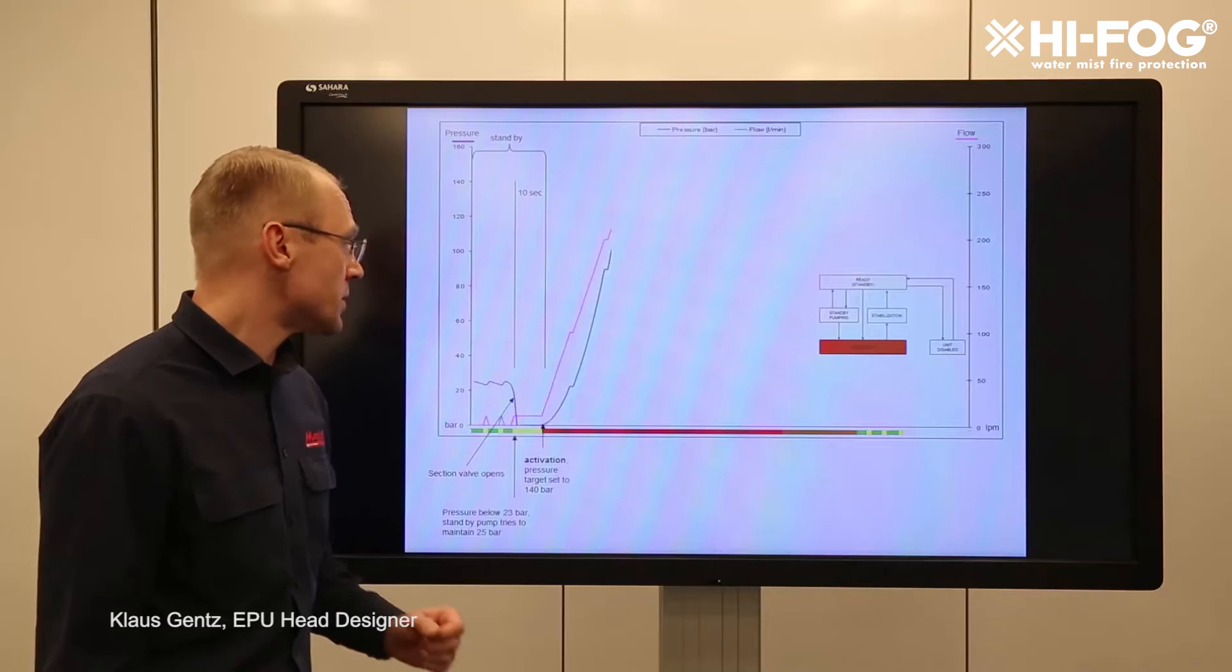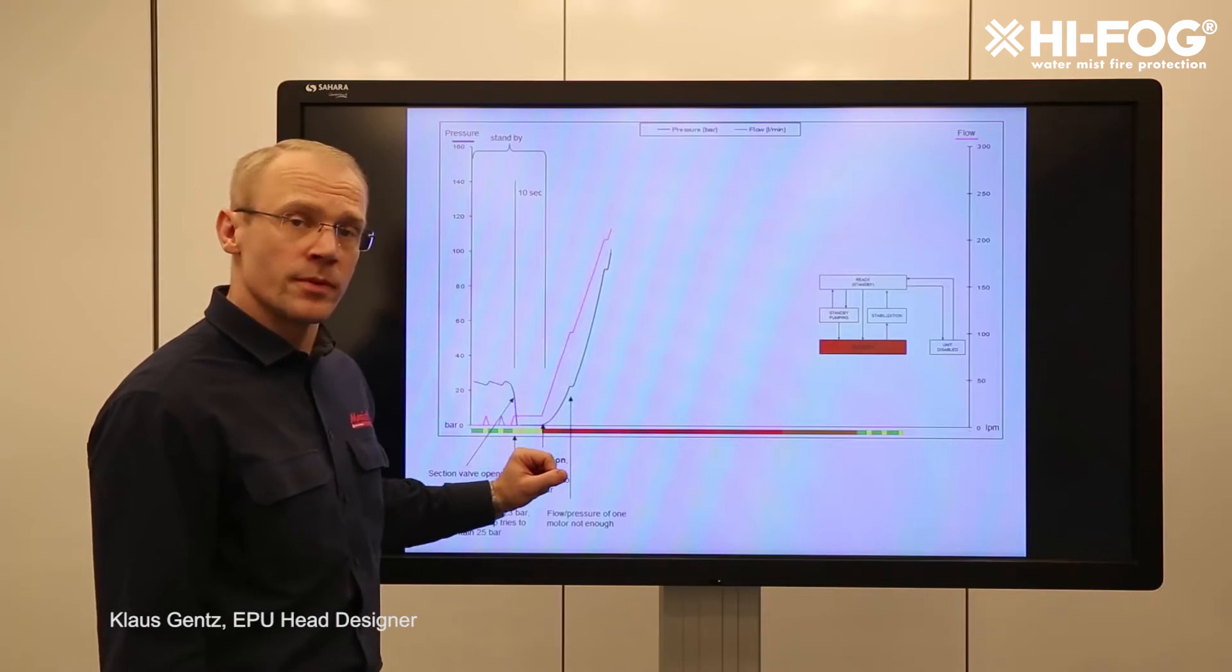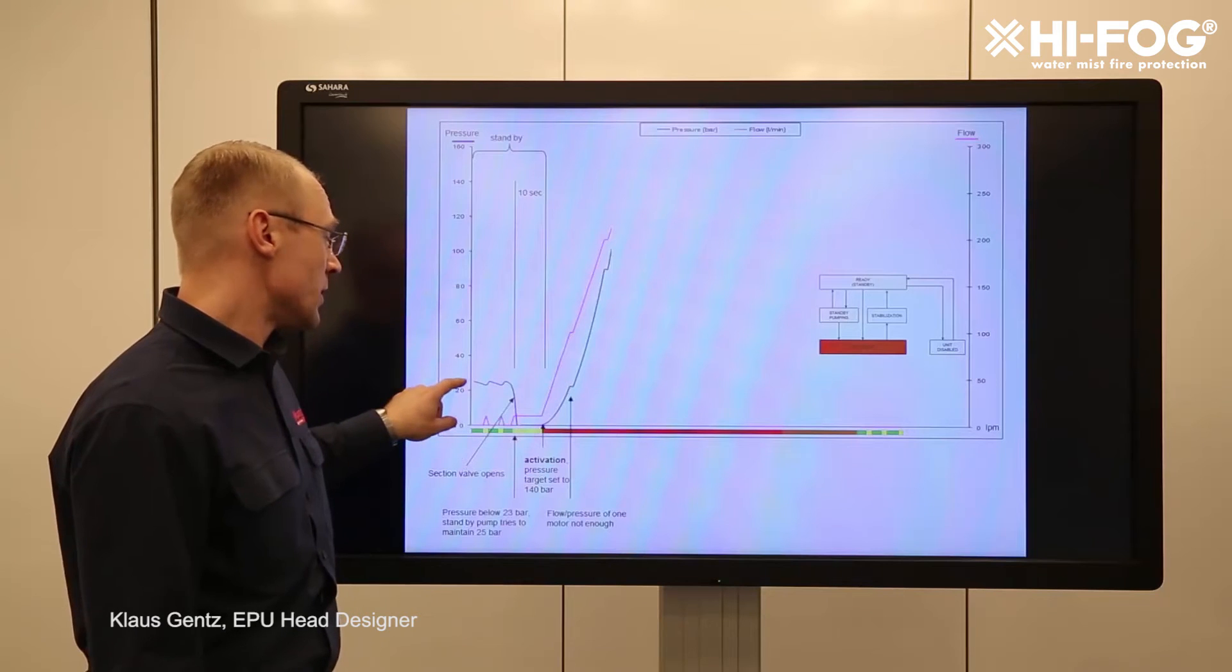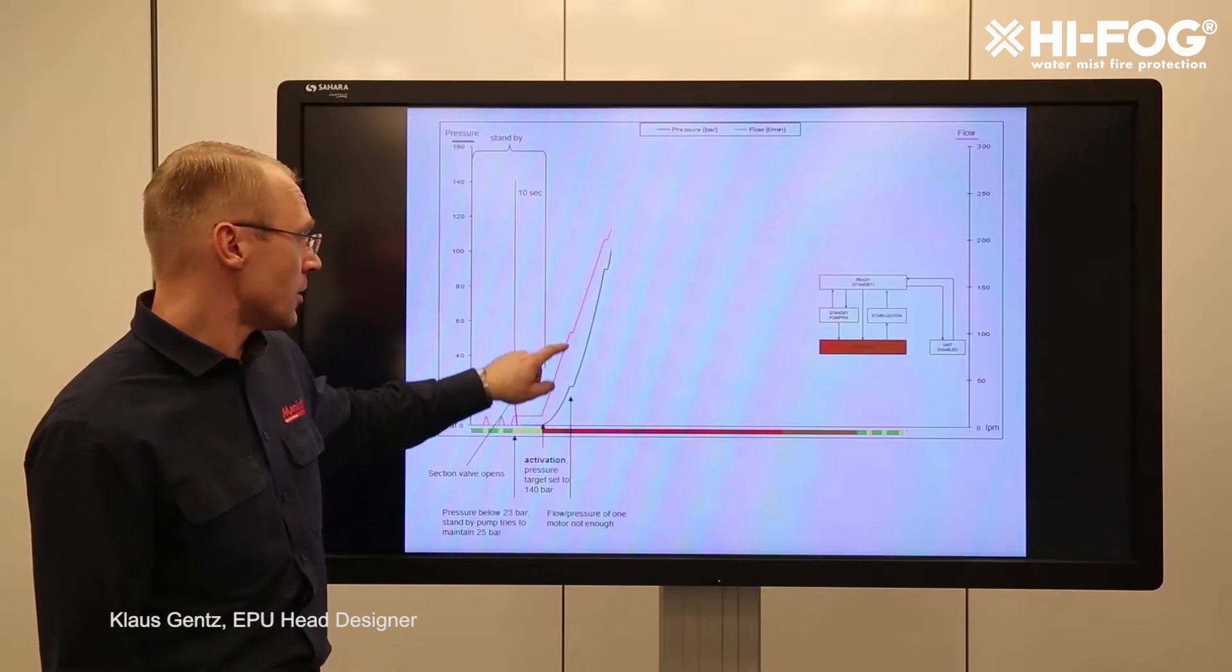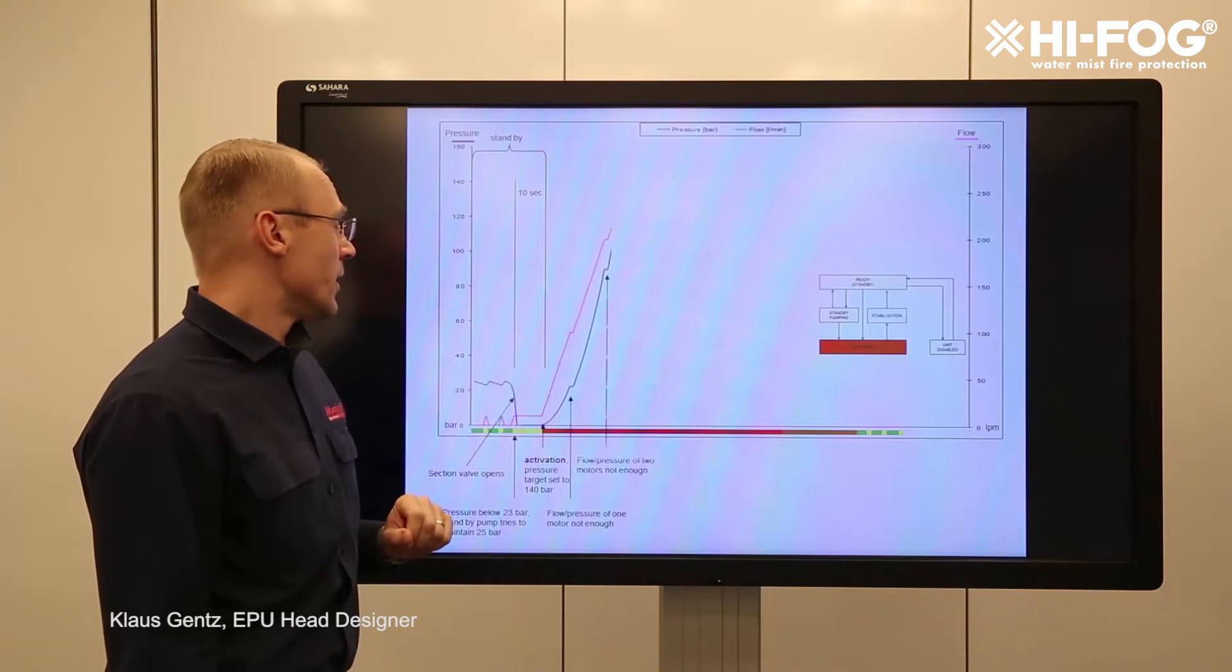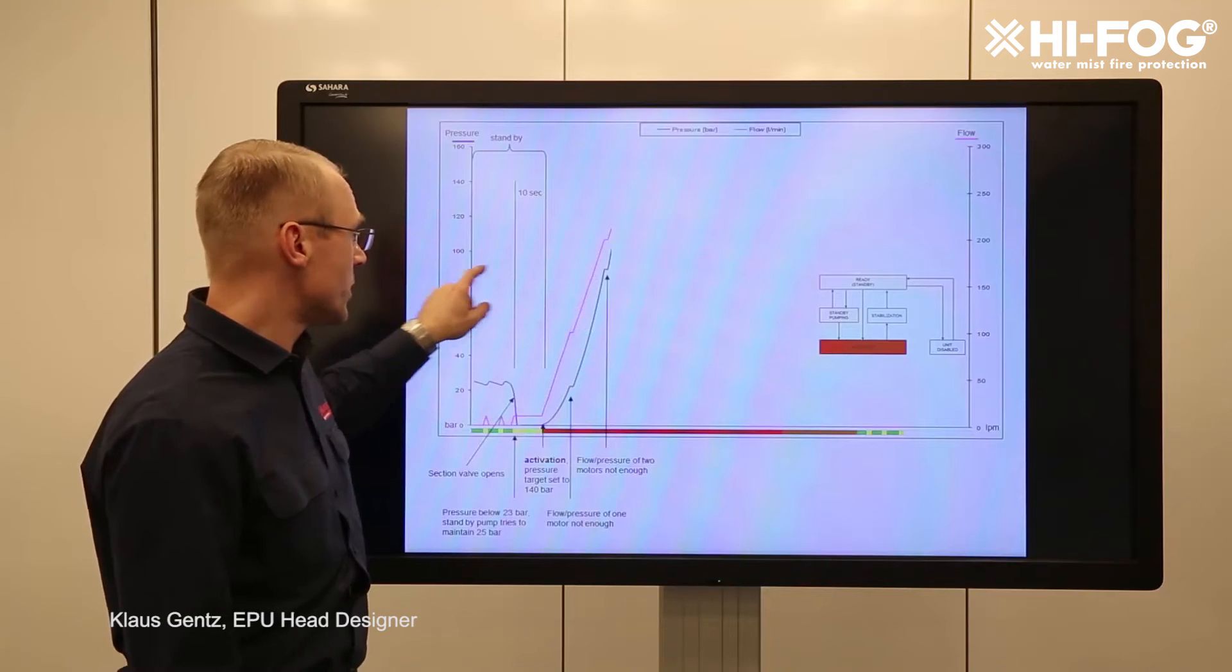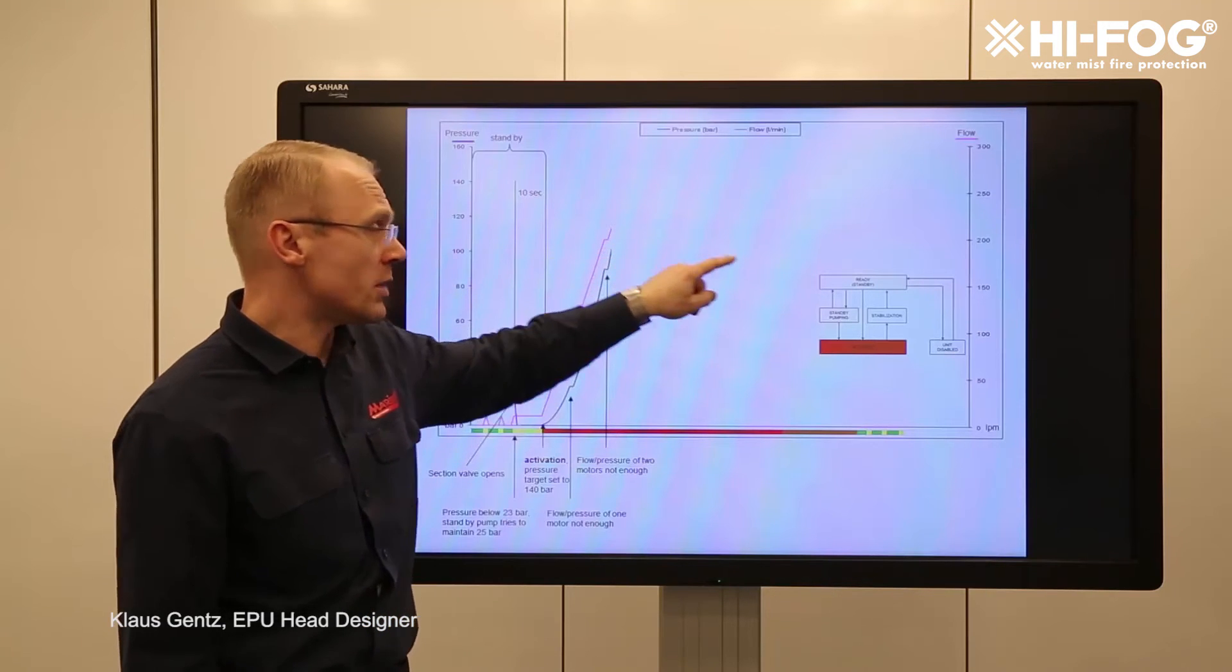At this point the unit starts to ramp up the motors. The first motor will give us roughly 25 bars of pressure with the flow of about 100 liters and the second motor will give about 90 bars of pressure and the flow will be roughly 200 liters.